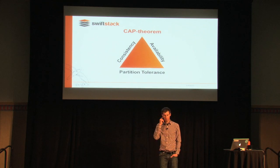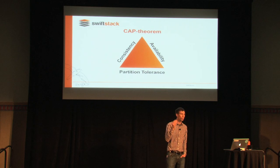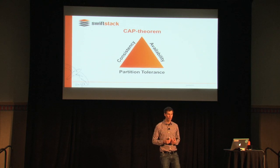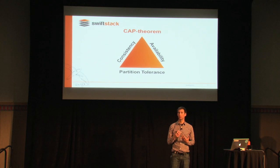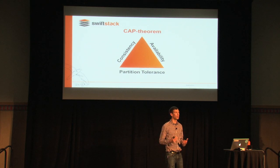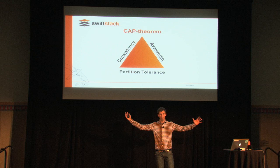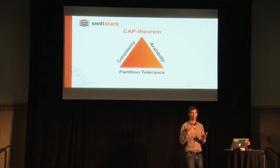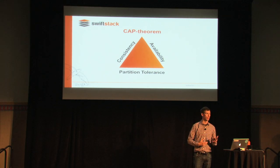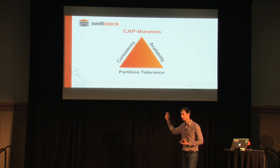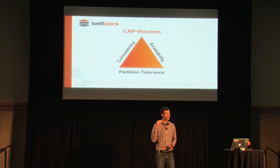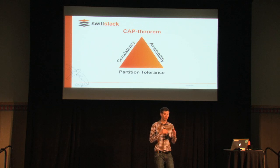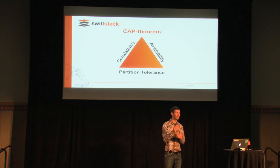I wish there was a one-size-fits-all storage system — you have piles of data and applications taking increasing volume in the data center. But the problem is that there are trade-offs in systems design. Brewster's CAP theorem sums it up nicely: you can have consistency, availability, or partition tolerance, but you can only pick two of them.